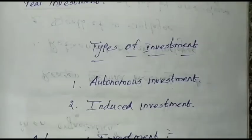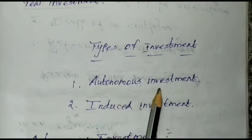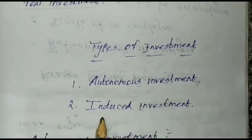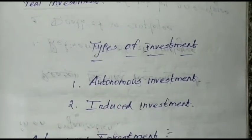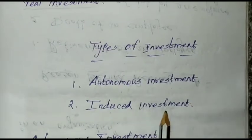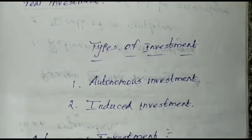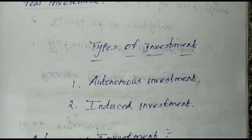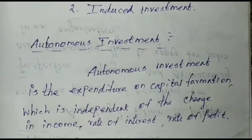What are the types of investment? The first one is autonomous investment. The second one is induced investment. Autonomous investment is a real investment. Induced investment is also a real investment. Let's talk about the meaning of autonomous investment.